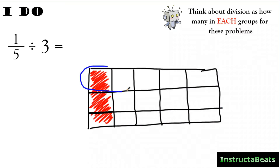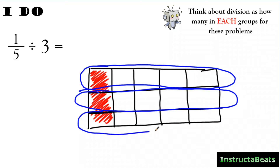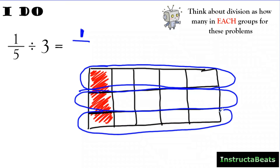I'll circle my 3 equal groups: here's 1, here's 2, and here's the 3rd. When I split that 1 fifth into 3 equal groups, I have 1 shaded piece in each group, so my numerator is 1. But my denominator is not 5 anymore, because I split these fifths into thirds going the other way. Now I have 1, 2, 3, 4, 5, 10, 15 total pieces. So my denominator is 15. When I took 1 fifth and split it into 3 equal groups, I had 1 fifteenth in each group. The answer to 1 fifth divided by 3 is 1 fifteenth.